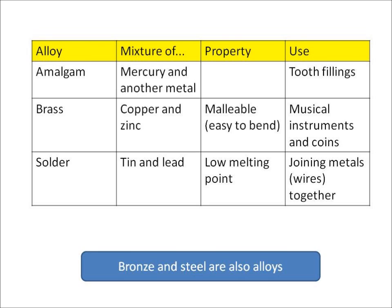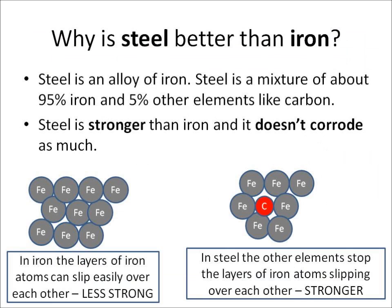You also need to know that bronze and steel are also alloys. Steel is an alloy of iron mixed with other elements like carbon, chromium, or nickel. Steel is much stronger than iron and it doesn't corrode as much.